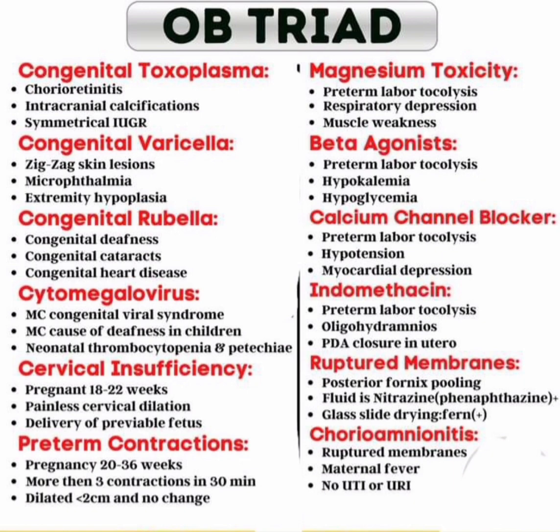and extremity hypoplasia. Now congenital rubella syndrome: the triad is congenital deafness, congenital cataracts, and congenital heart disease.